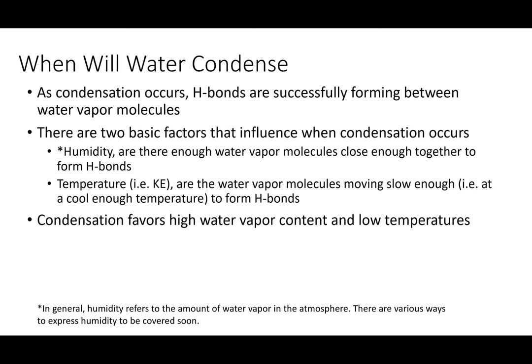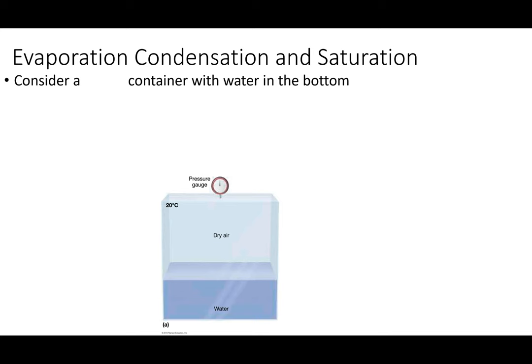What favors condensation? High water vapor and cool or low temperatures. Here's a thought experiment: I have a sealed box at 20 degrees Celsius. Inside there's air but it's dry — no water vapor. The little gauge up here detects water vapor by measuring how much the gas particles are bumping around — that's what the pressure gauge is reading.